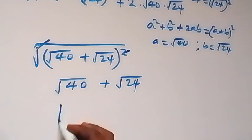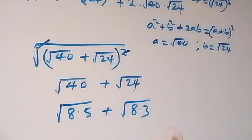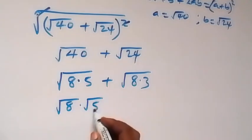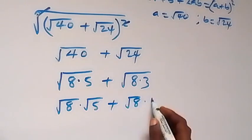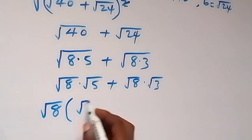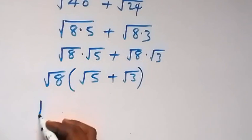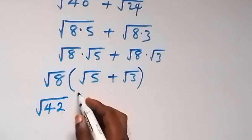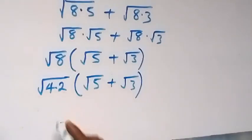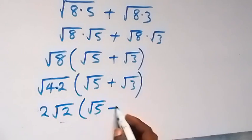Now let's simplify root 40 plus root 24. We separate root 40 as root 8 times root 5, and root 24 as root 8 times root 3. Factoring out root 8, we get root 8 times (root 5 plus root 3). Then root 8 equals root 4 times root 2, which is 2 root 2. So we have 2 root 2 times (root 5 plus root 3).